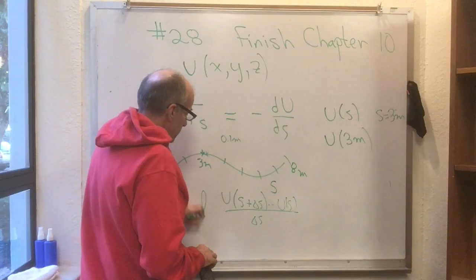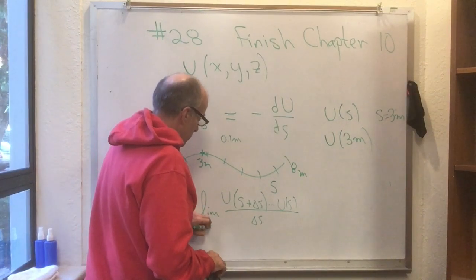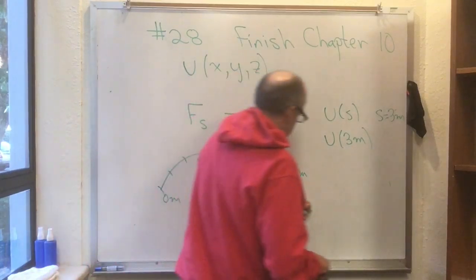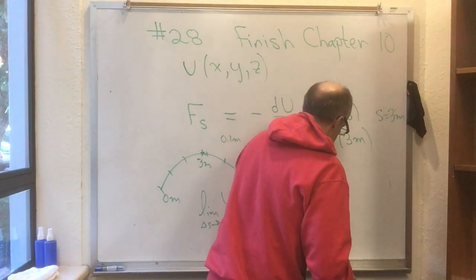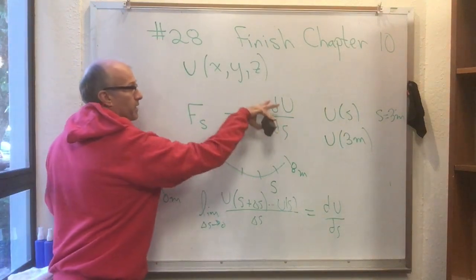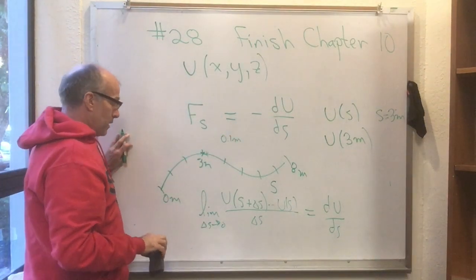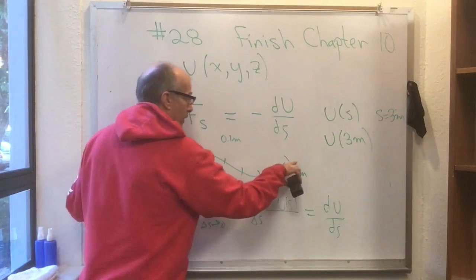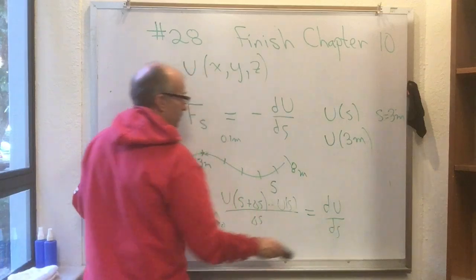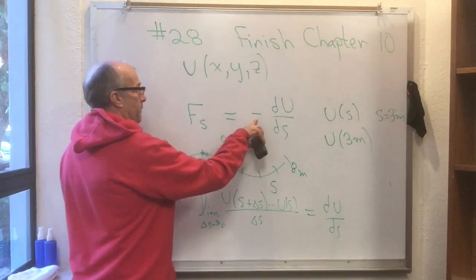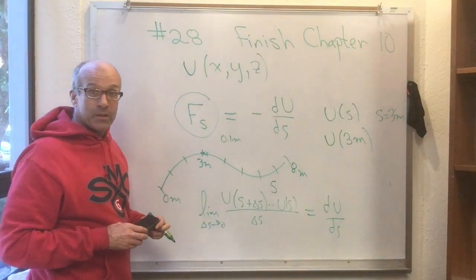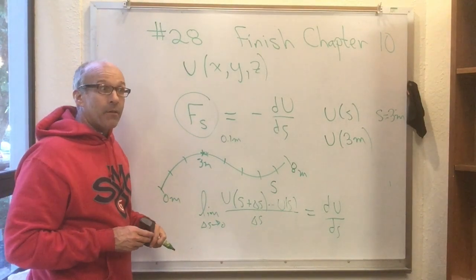If you take the limit, the delta S goes to 0 of that, that's what we mean by dU/dS. So now you know how to interpret the right-hand side of this equation. You have to know how U varies with the position on the path, and then you take the derivative of U with respect to that, and you multiply by minus 1, and that gives you the component of the force in the direction of the path.